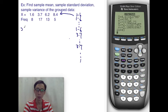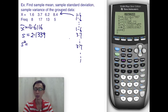and lo and behold, we have our results immediately. So the sample mean is going to be 4.6116, the sample standard deviation is our SX, that's 2.1339, and the sample variance is just SX squared.